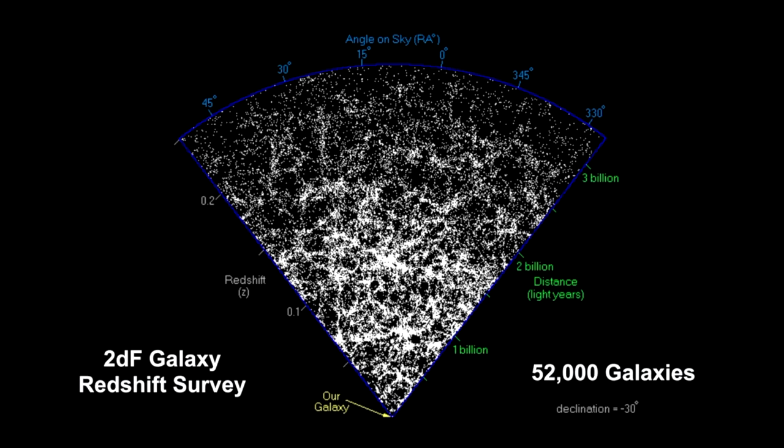By collecting distances to thousands of galaxies in a narrow strip of the sky, it is possible to produce a slice of the universe, like this one from the 2DF Galaxy Redshift Survey. In 2003, this survey looked out into the universe to 3.5 billion light-years.